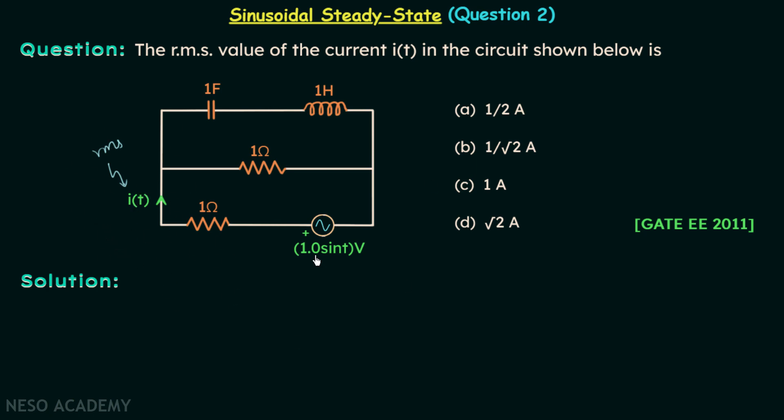Step number one is to have this circuit in the frequency domain. IT will have the phasor I phasor, and we are interested in finding out I phasor.